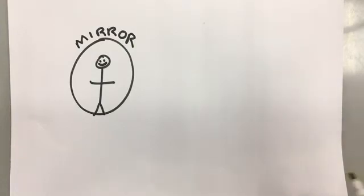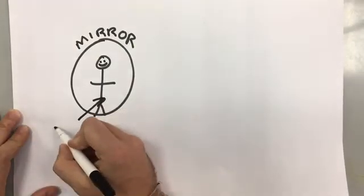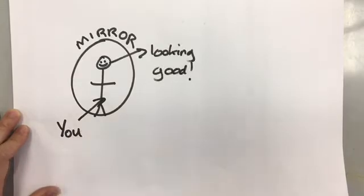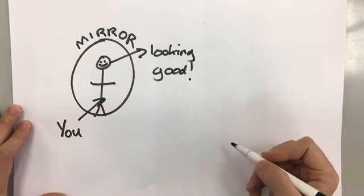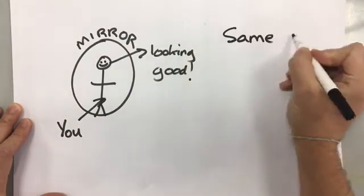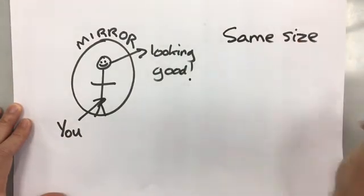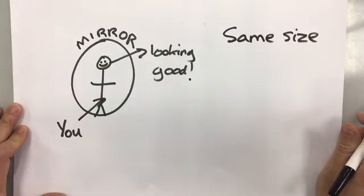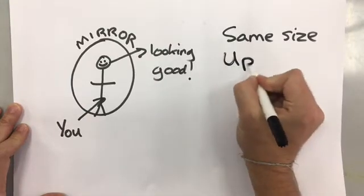When you look in a mirror you see a reflection of yourself. We can describe the image you see of yourself as being the same size. It's not magnified, you don't appear huge in the mirror or tiny. It's the same size as you. We say it's upright.